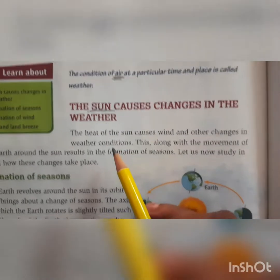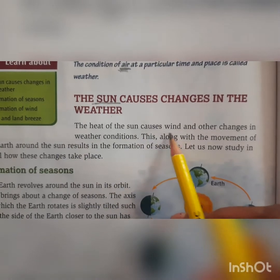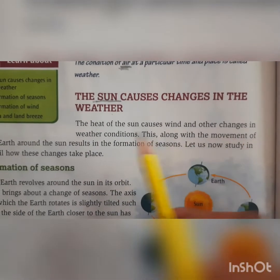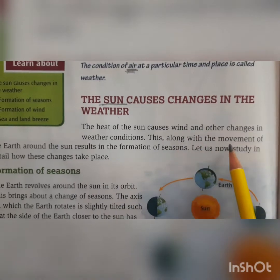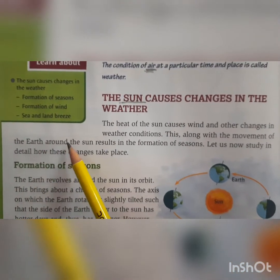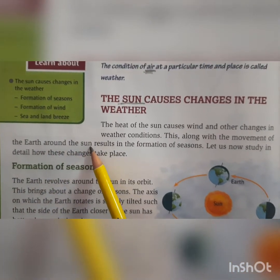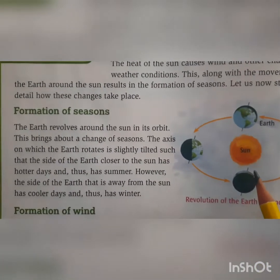Now let's see how. The heat of the sun causes wind and other changes in the weather condition. This, along with the movement of the earth around the sun, results in the formation of seasons. Let us see in detail how these changes take place.